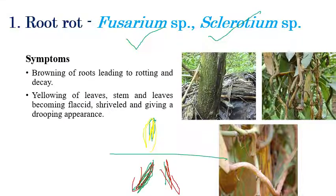Flaccidity, shriveling of leaves, and drooping of leaves can be seen, along with dieback-like symptoms, especially on leaves.